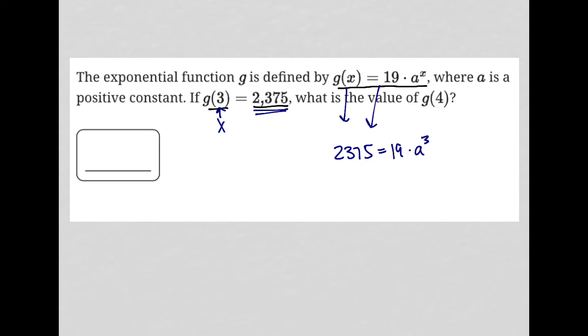So there's my plugging in of the information provided in the question. I can then divide both sides by 19. I go to my calculator to see what is 2375 divided by 19. I get 125 = a³.